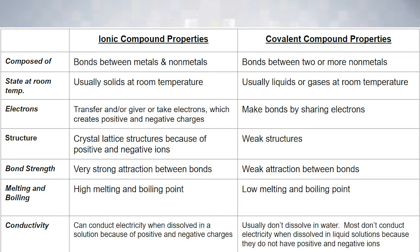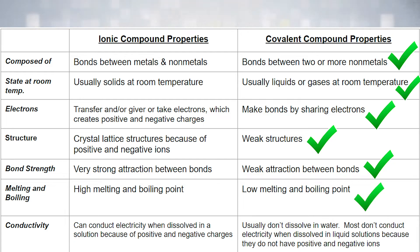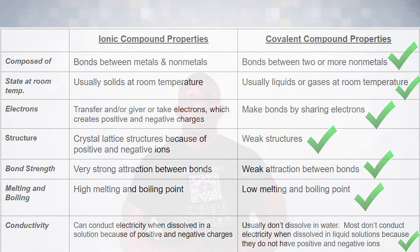Covalent compounds are bonds between two or more non-metals and are usually liquids or gases at room temperature. They make bonds by sharing electrons. They have weak bonds between their molecules, which gives them low melting and boiling points — meaning it's very easy to break these bonds apart. They usually don't dissolve in water, although some will. Most covalent compounds don't conduct electricity when dissolved in liquid solutions because they do not have positive and negative ions.